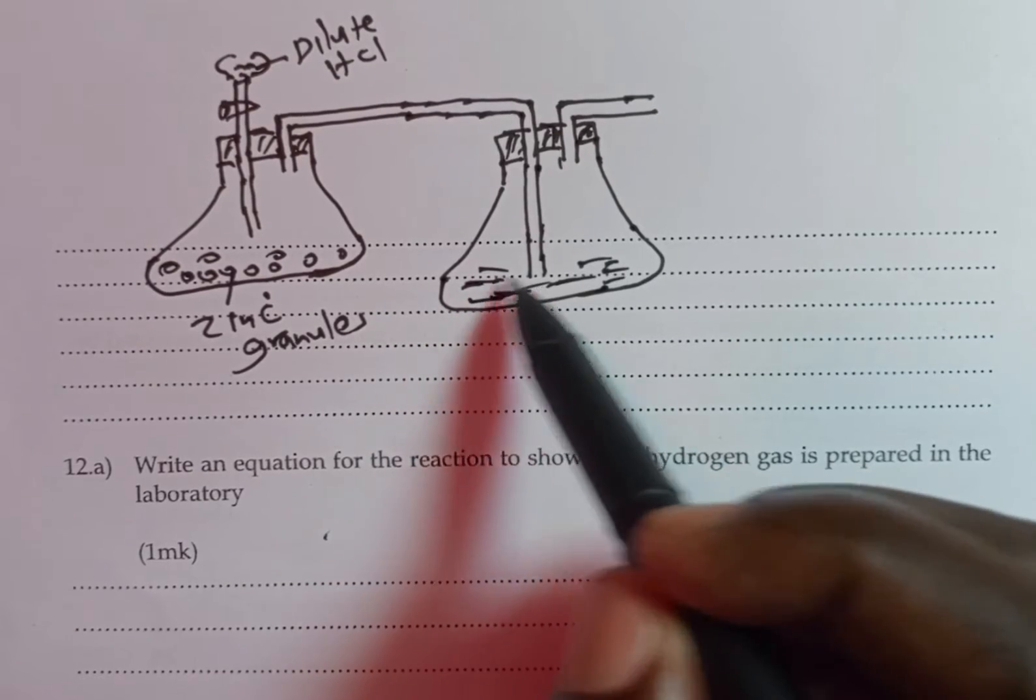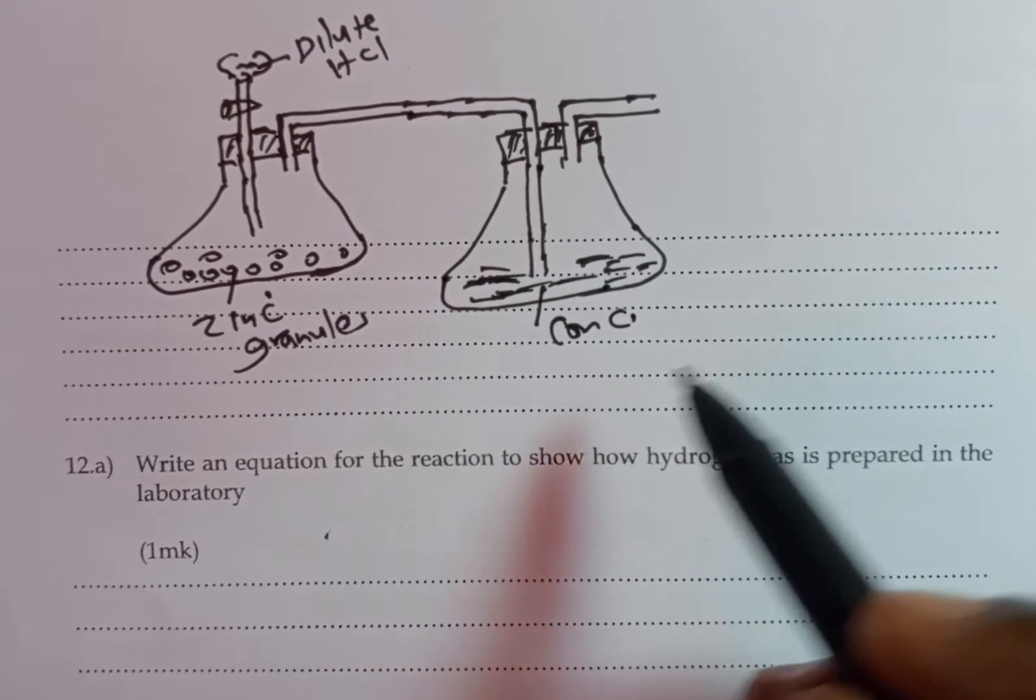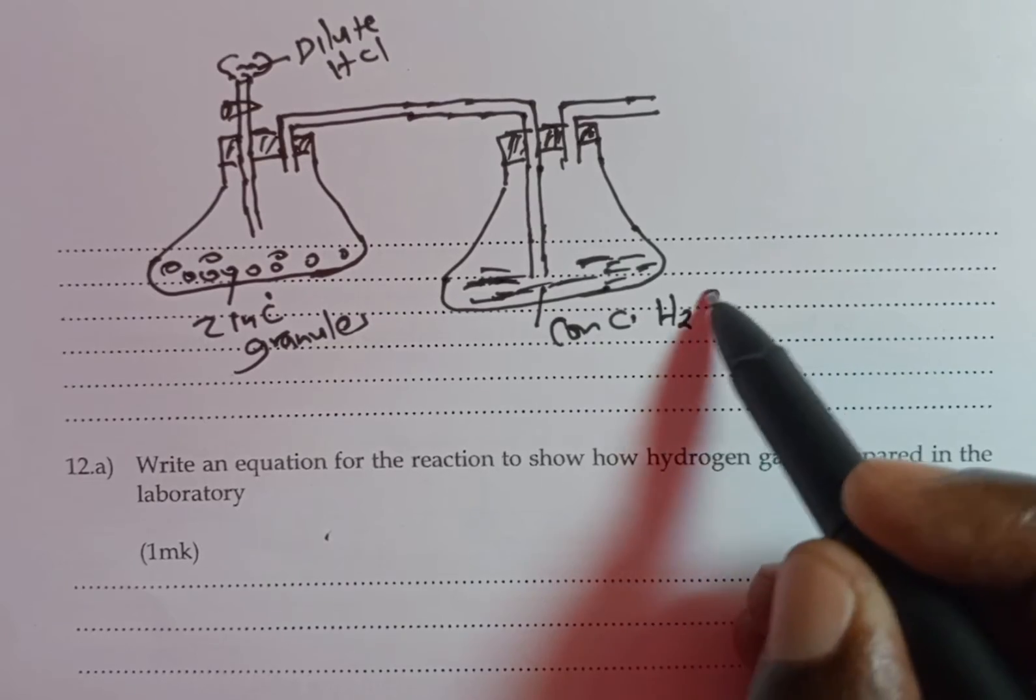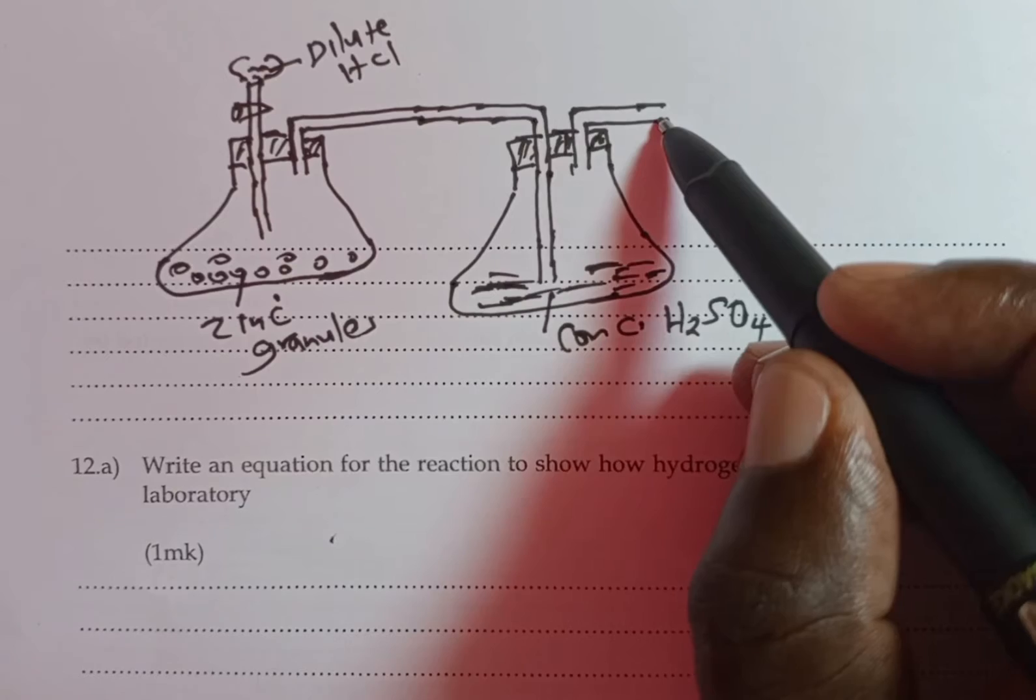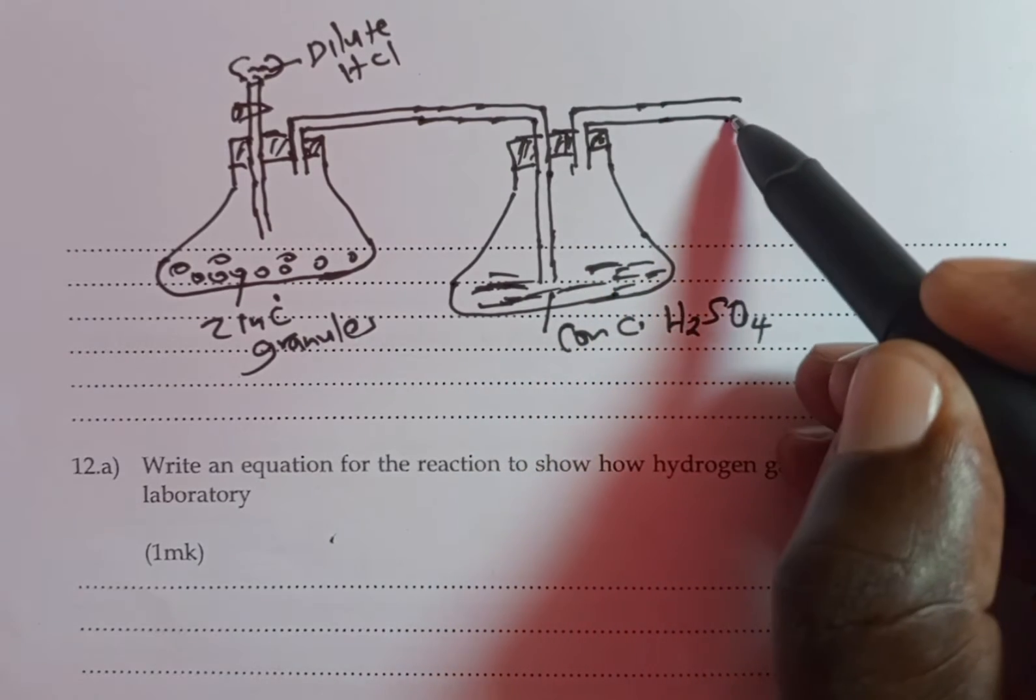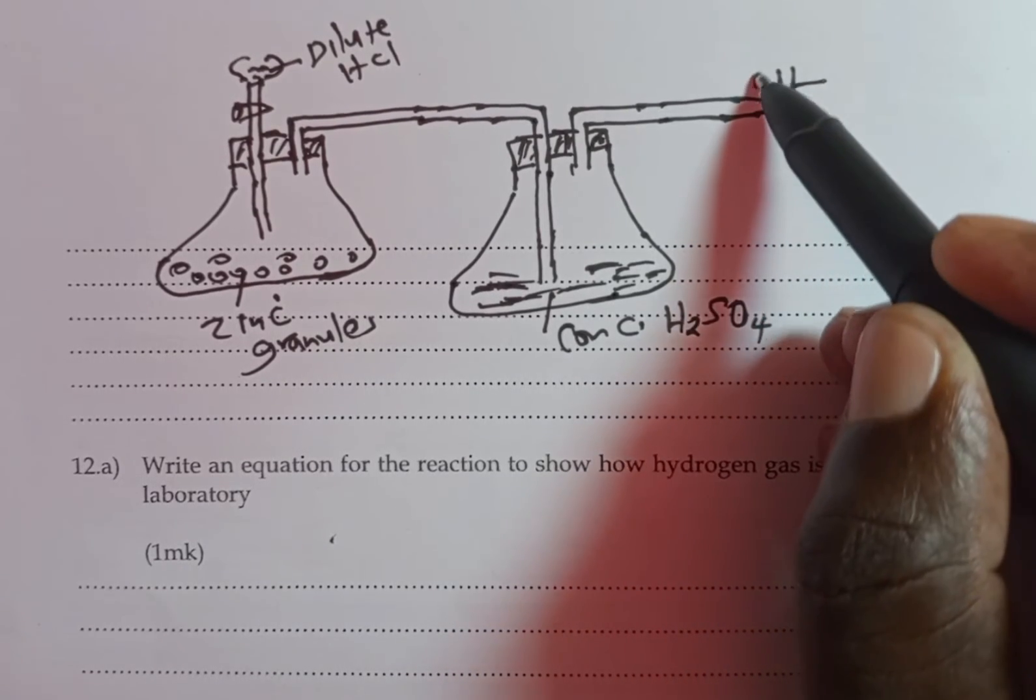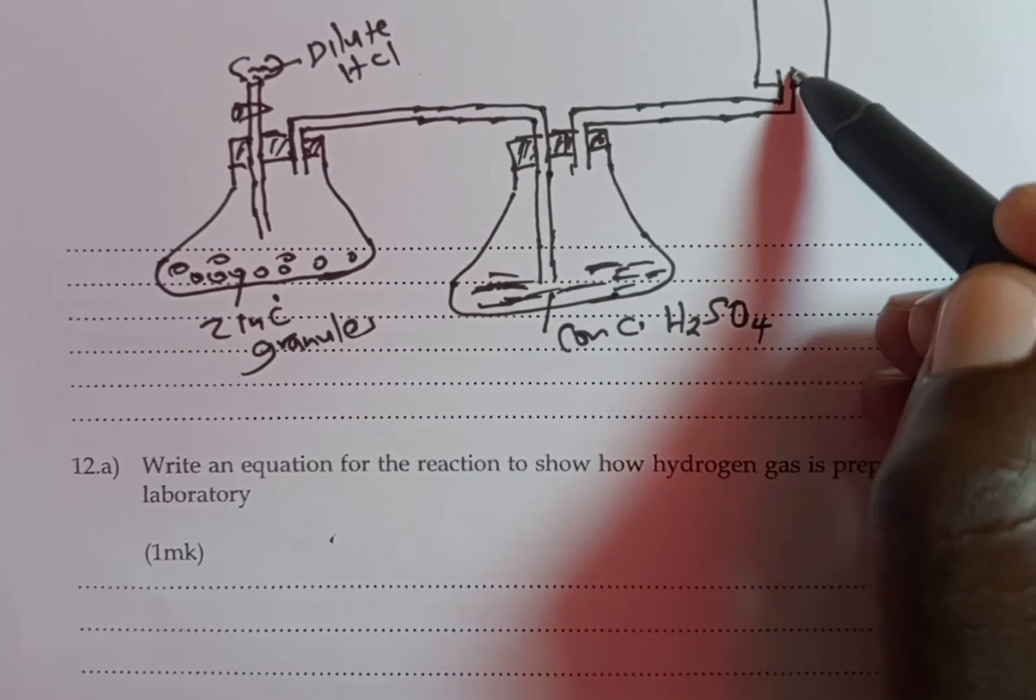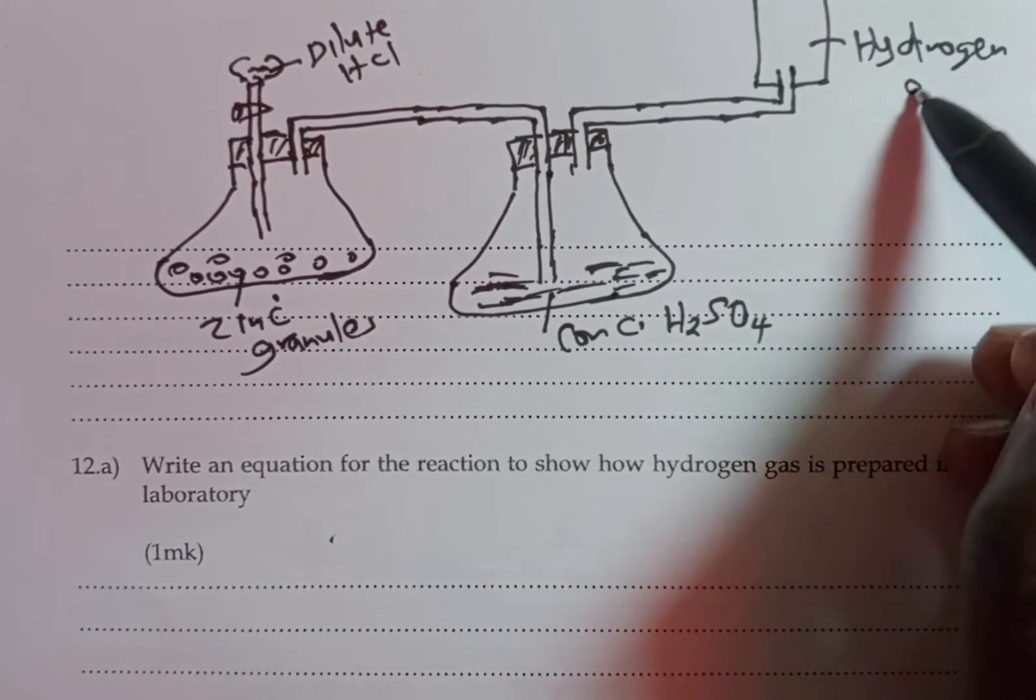For us to have the gas dry, we use concentrated sulfuric acid. Let me use the symbols for the interest of space and time. After the gas has been produced and dried, it is collected by upward delivery because it is less dense than air. This is our hydrogen gas.